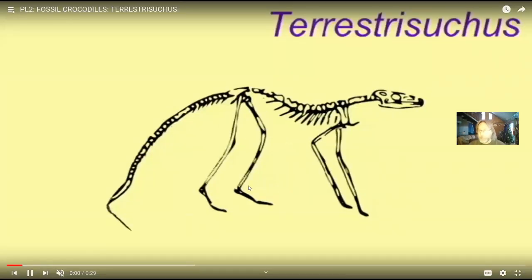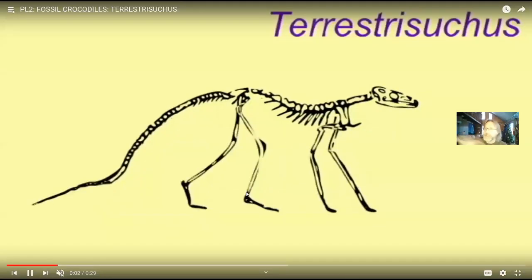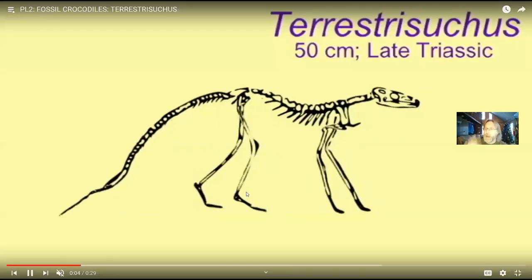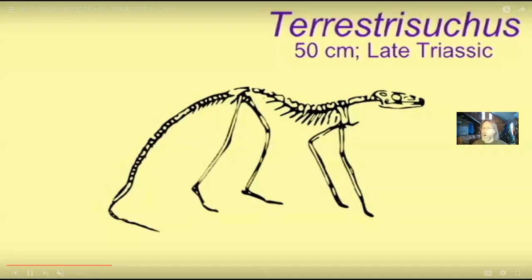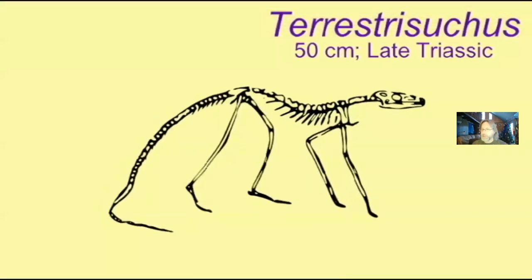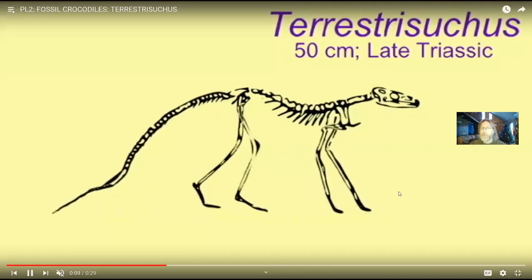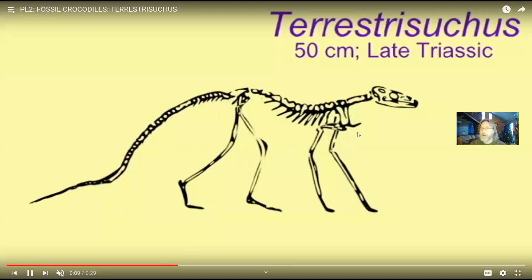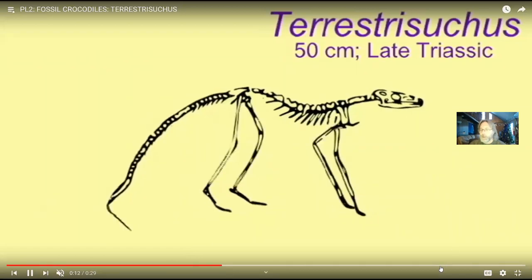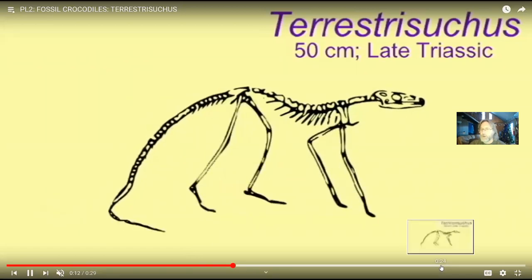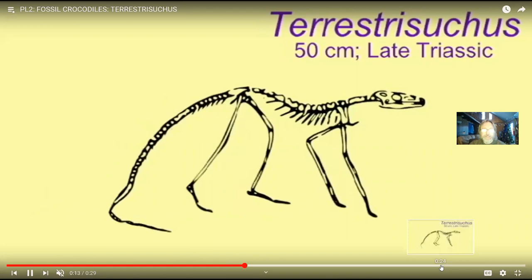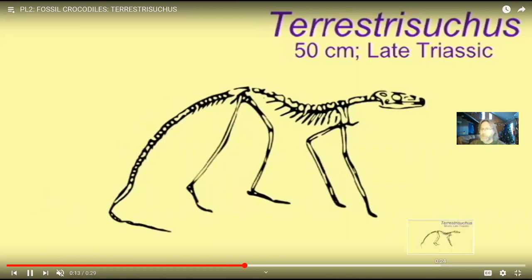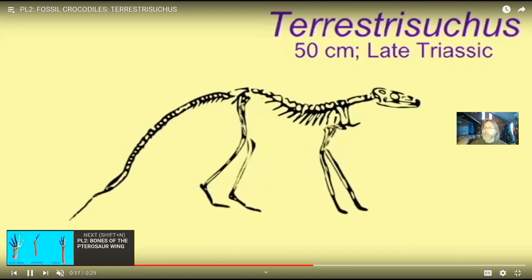Of this mix, most become extinct. There were armored aetosaurs which also became extinct. But we still do have crocodiles — here's an early crocodile, maybe a foot long. Notice how different it seems from modern crocodiles. But that is a surviving lineage today.